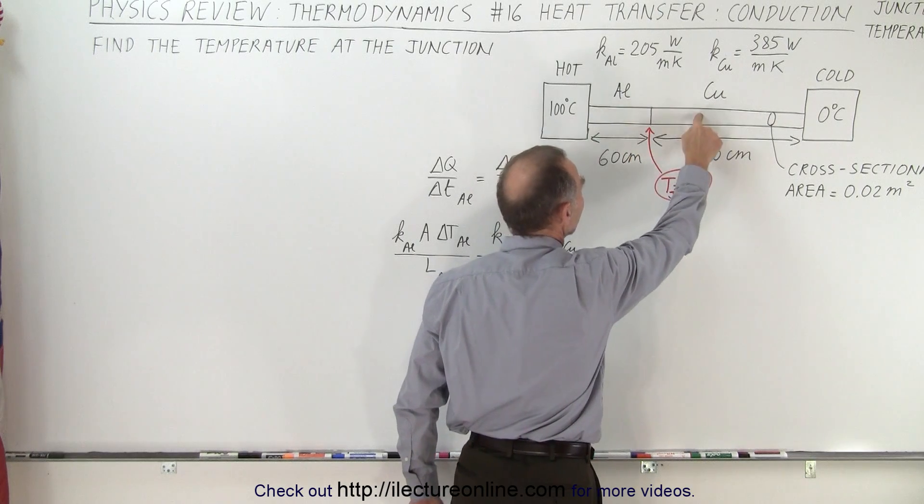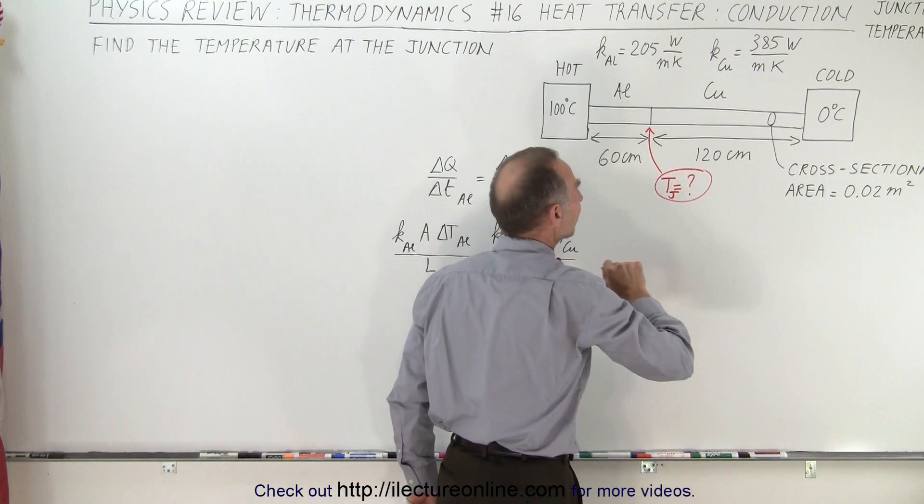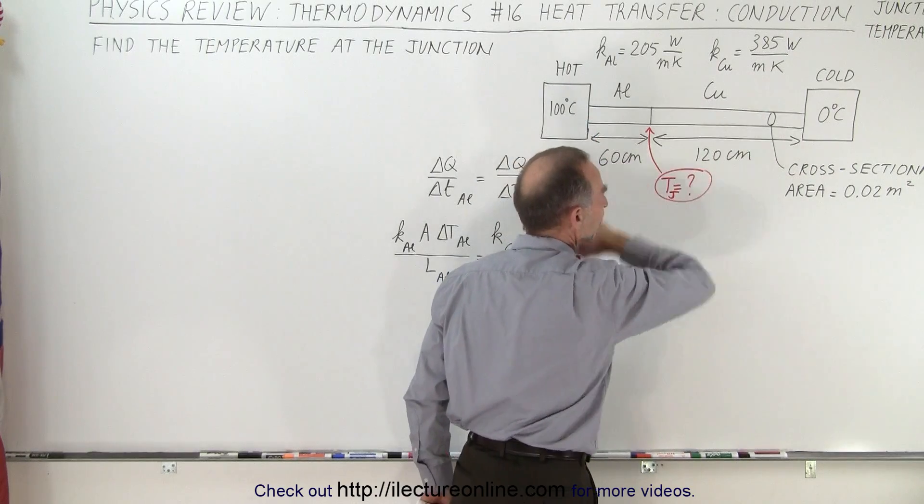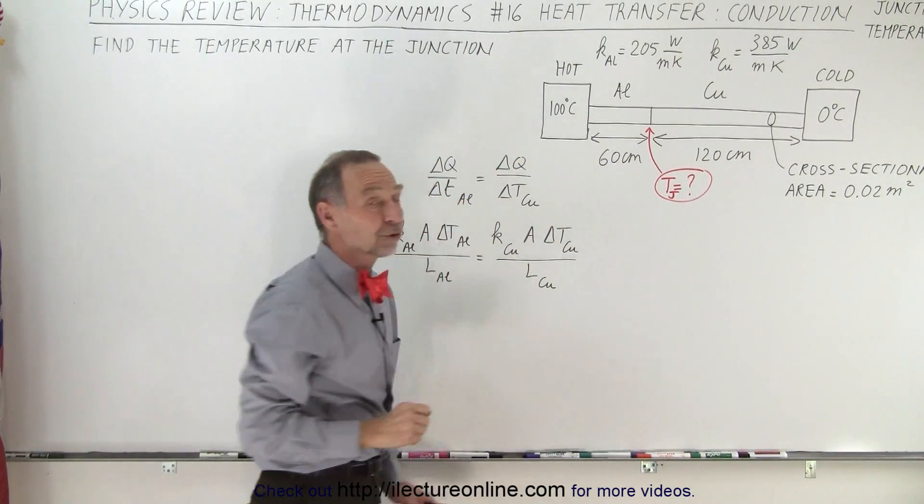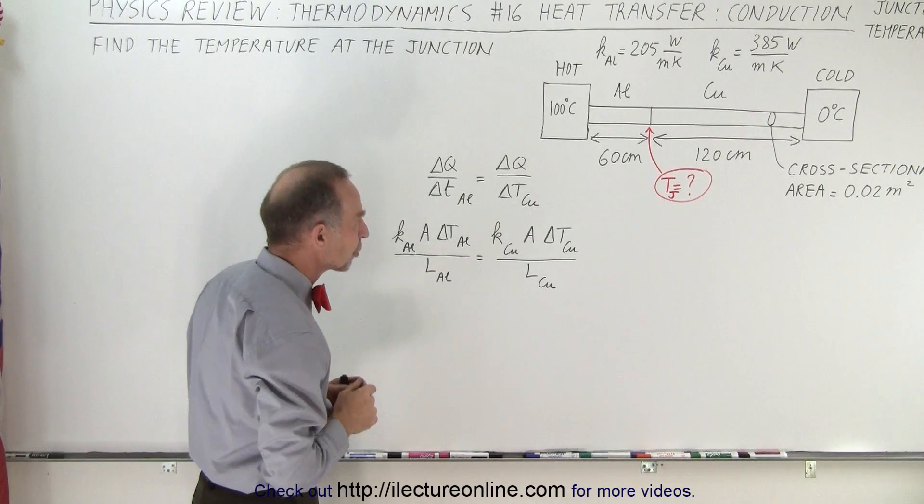One part is aluminum, the other part is copper. We have the individual lengths of the two pieces. The cross section area for the two is the same. And now we're trying to find the temperature at the junction between the two.